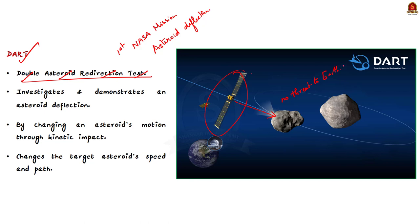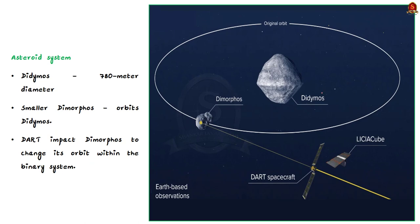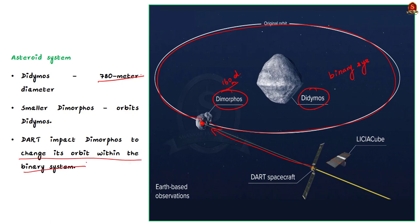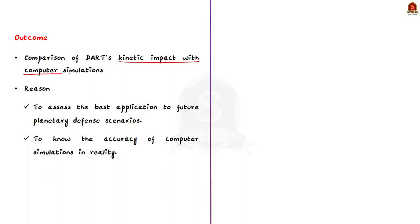The asteroid system targeted is the binary near-earth asteroid system Didymos, which has approximately 780 meters in diameter. The smaller one, Dimorphos, has approximately 160 meters diameter, and it orbits Didymos. In this asteroid redirection test, the DART spacecraft will impact Dimorphos — collide with it to change its orbit within the binary system. The DART investigation team will compare the results of DART's kinetic impact with Dimorphos to highly detailed computer simulations of kinetic impacts on asteroids.